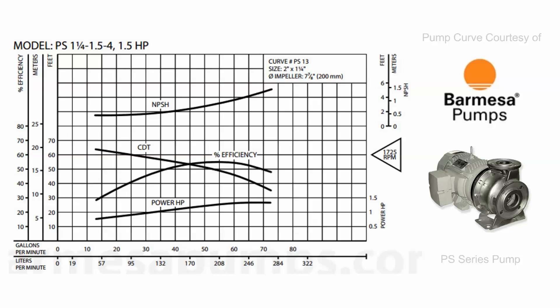This particular pump curve is a great example because you can really see the detail of information offered in one small graph. It shows motor speed at 1725 RPM, horsepower requirements, gallons per minute, liters per minute, efficiency, and head in meters and feet. This pump is offered in one and a half horsepower so it can achieve the full range of the curve without fear of overloading. Additional information includes the curve number for referencing with the manufacturer, size information, and impeller diameter — all giving a person a thorough picture of expected pump performance.